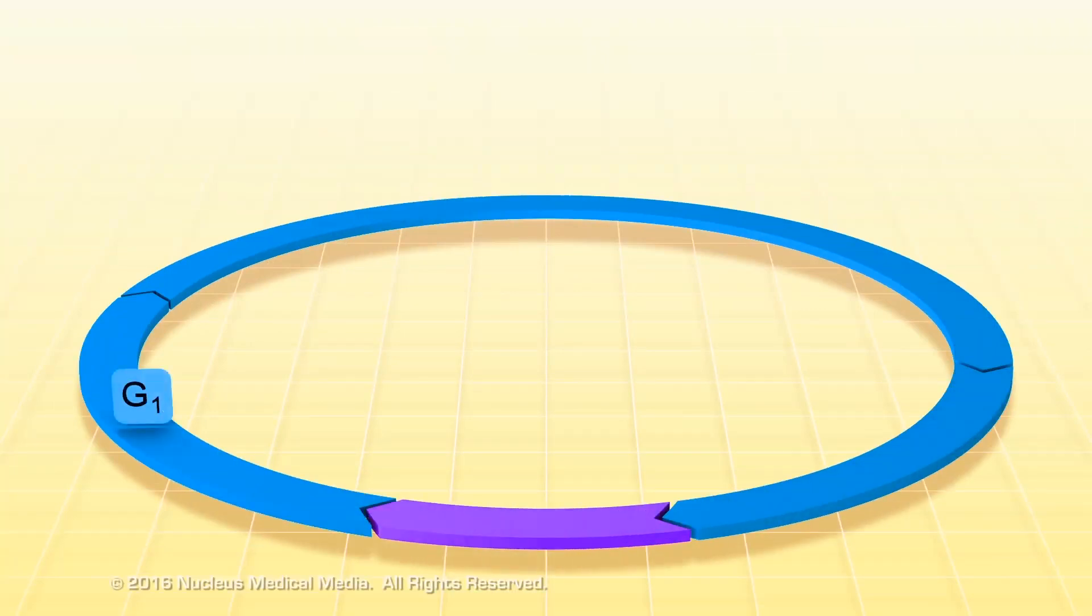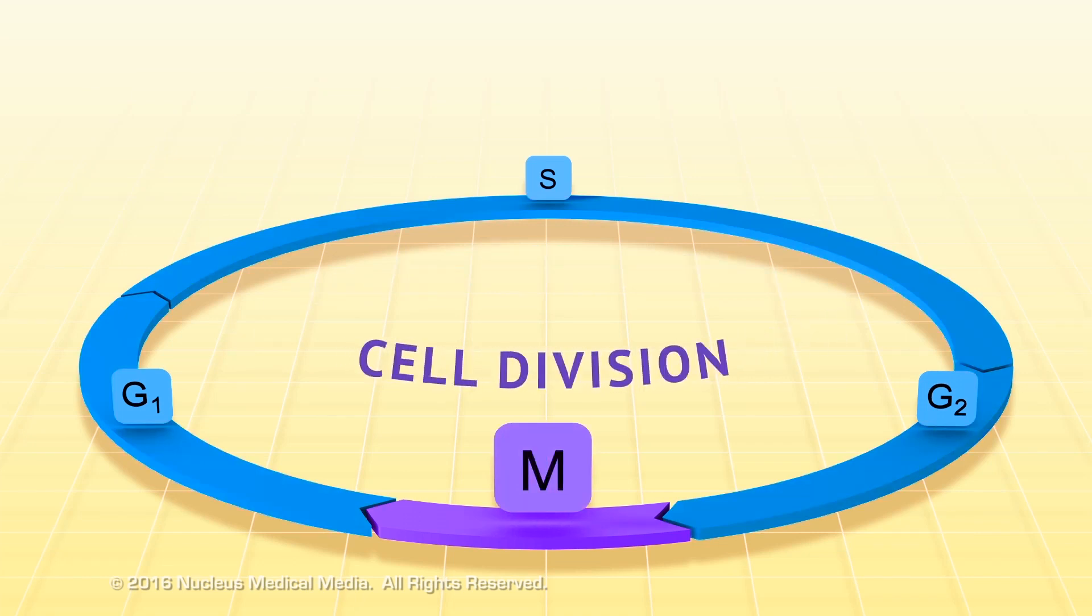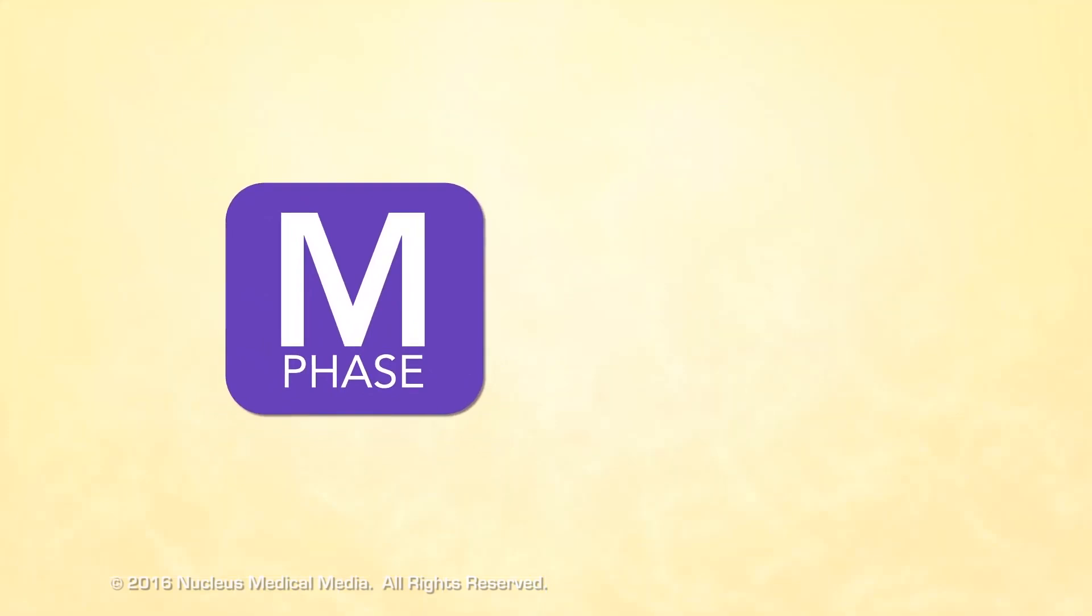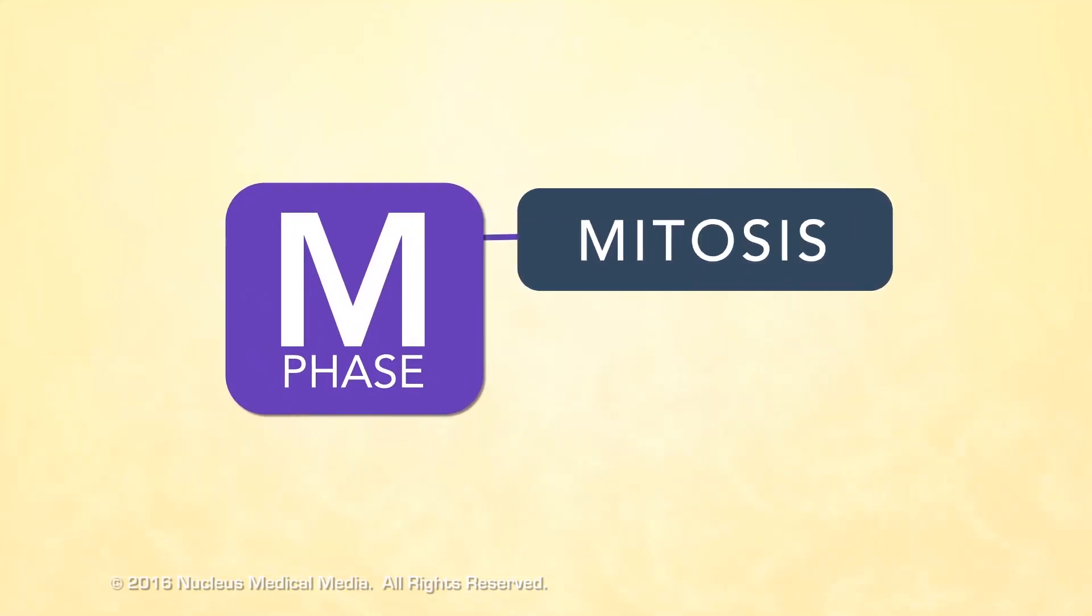The G1, S, and G2 phases make up interphase, and the M phase represents cell division. Cell division includes division of the nucleus, called mitosis, and division of the cytoplasm, called cytokinesis.